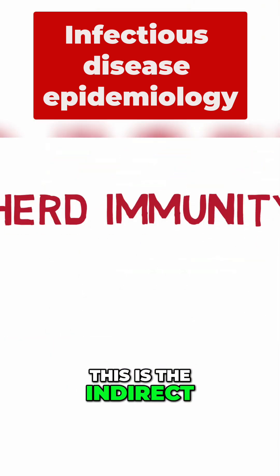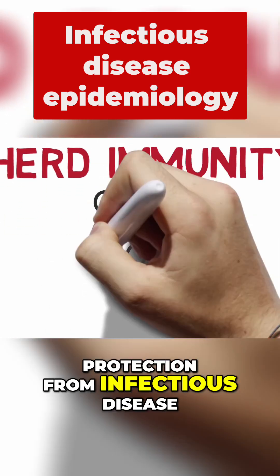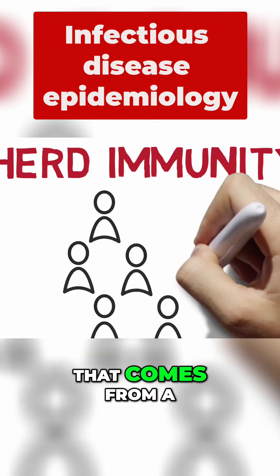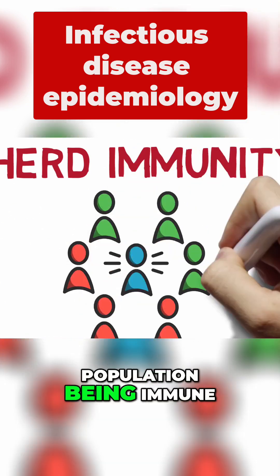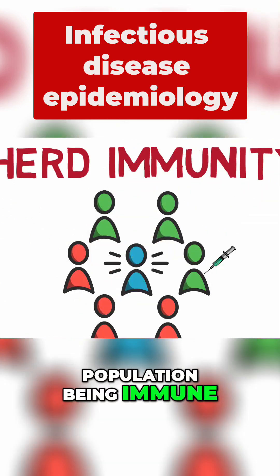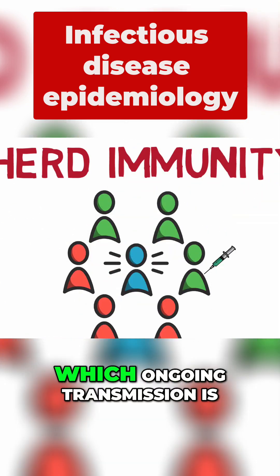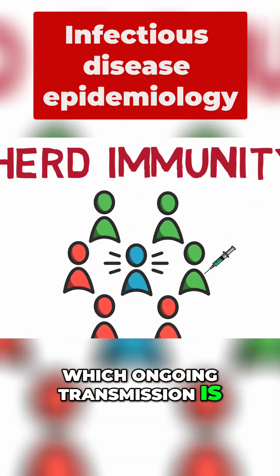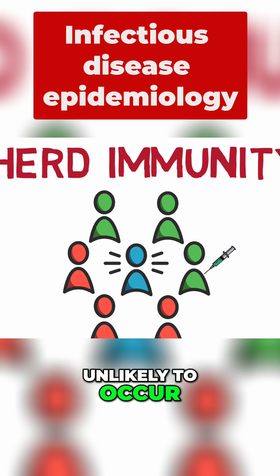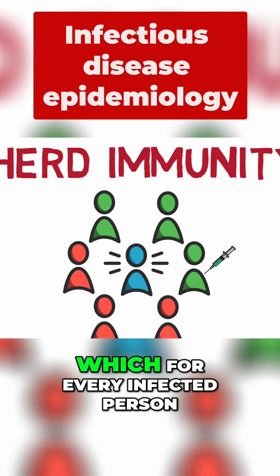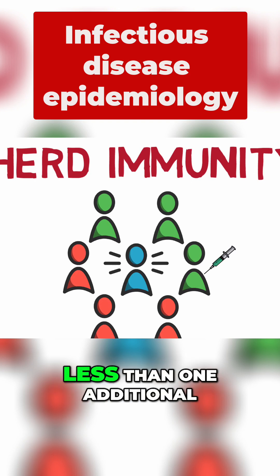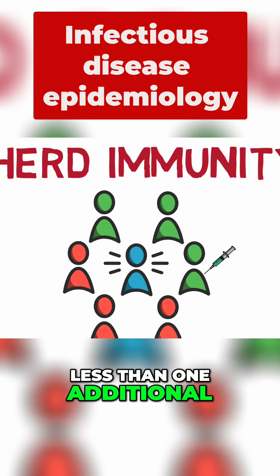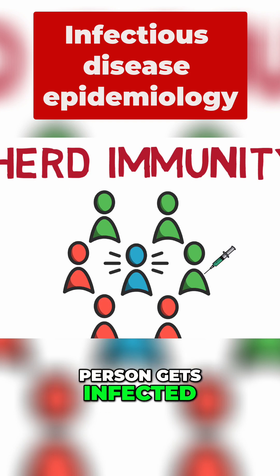Herd immunity is the indirect protection from infectious disease that comes from a large percentage of the population being immune. It's the point at which ongoing transmission is unlikely to occur — the point at which, for every infected person, less than one additional person gets infected.